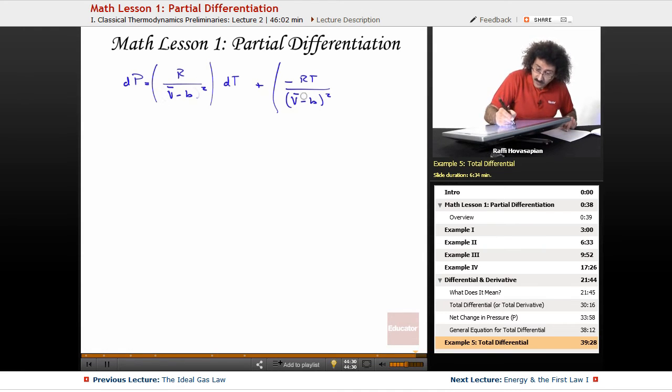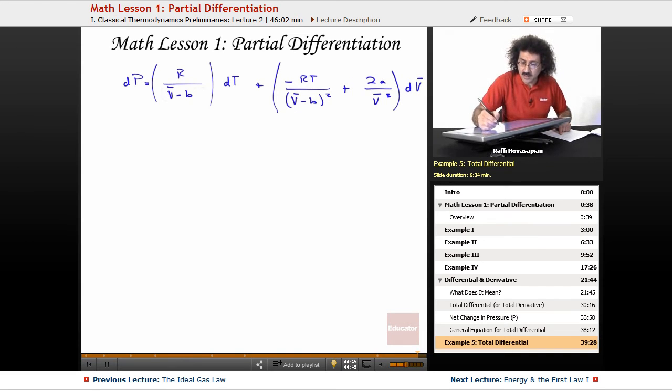This one is squared, not this one. V minus B squared. Plus 2A over V cubed times dV. This is the total differential for the van der Waals equation.